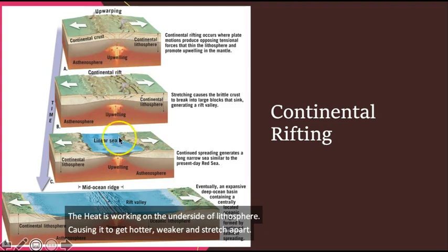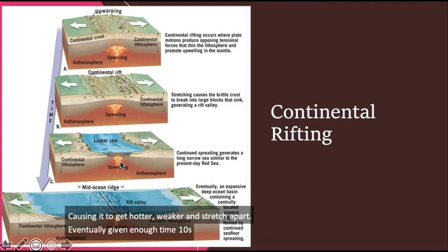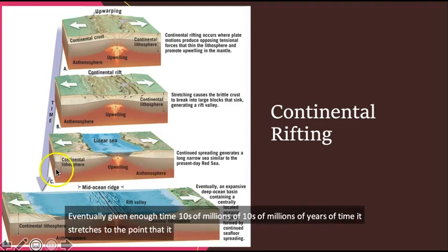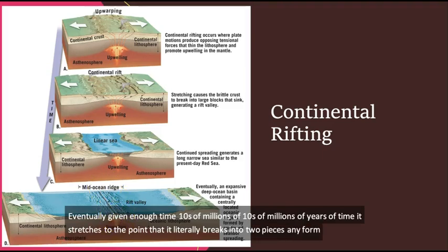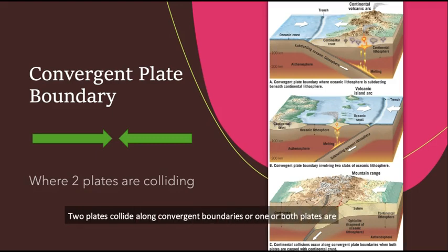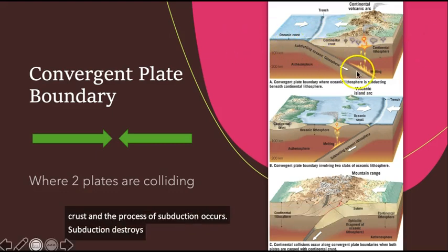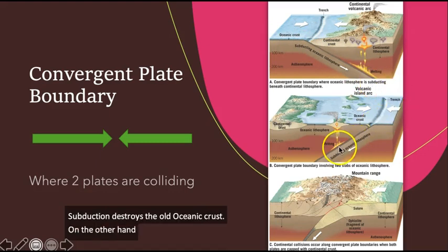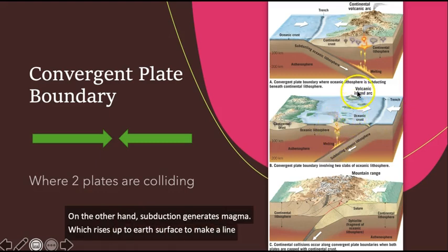Eventually, given enough time, tens of millions of years of time, it stretches to the point that it literally breaks into two pieces and you form a new plate boundary. Two plates collide along convergent boundaries. When one or both plates are oceanic crust, then the process of subduction occurs. Subduction destroys the old oceanic crust. On the other hand, subduction generates magma, which rises up to Earth's surface to make a line of volcanoes parallel to the trench called a volcanic arc.